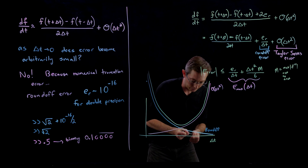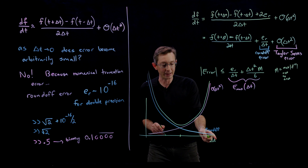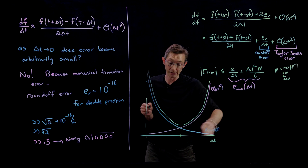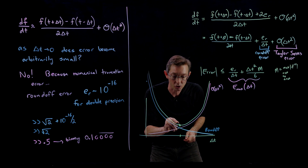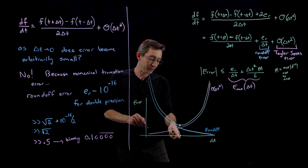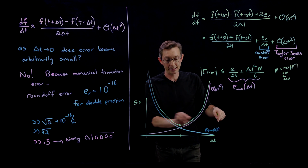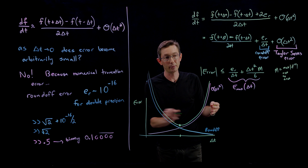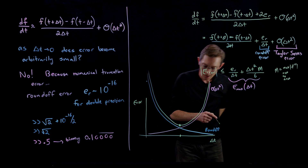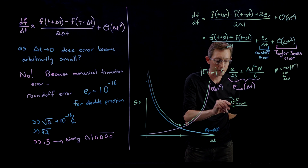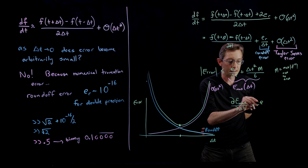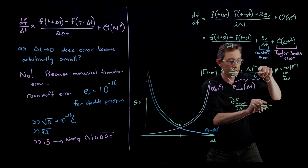We're trying to find that sweet spot delta t where the total error is minimized. Taking ∂E_max/∂Δt and setting it equal to zero gives: −E_r / Δt² + M·Δt / 3 = 0. Moving terms over and multiplying both sides by Δt squared gives Δt cubed = 3·E_r / M.